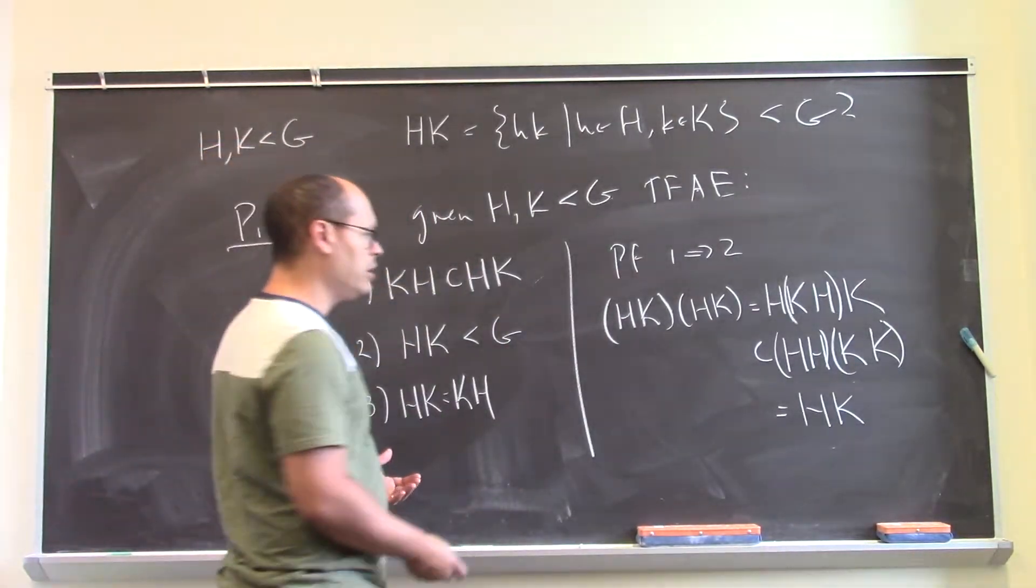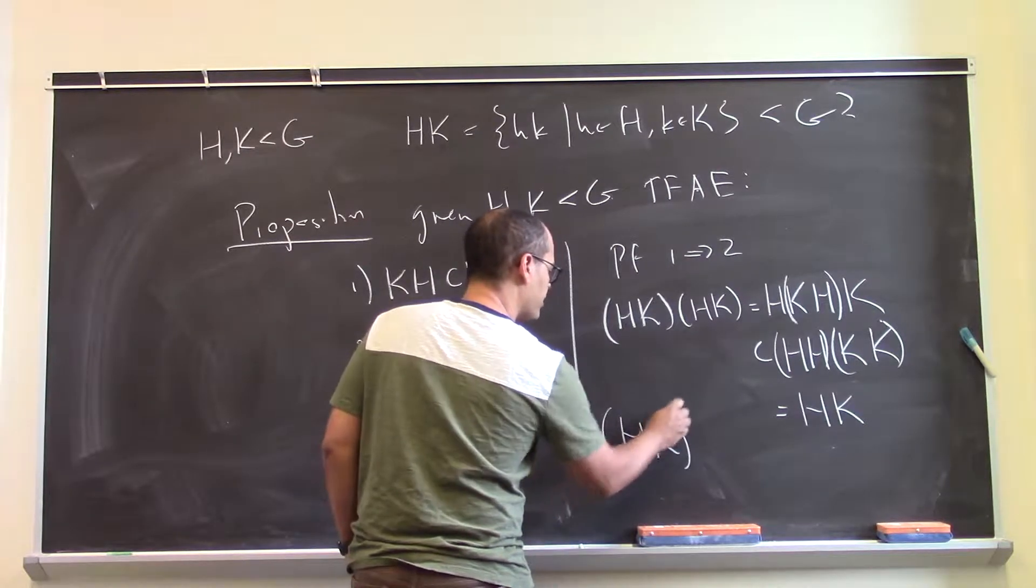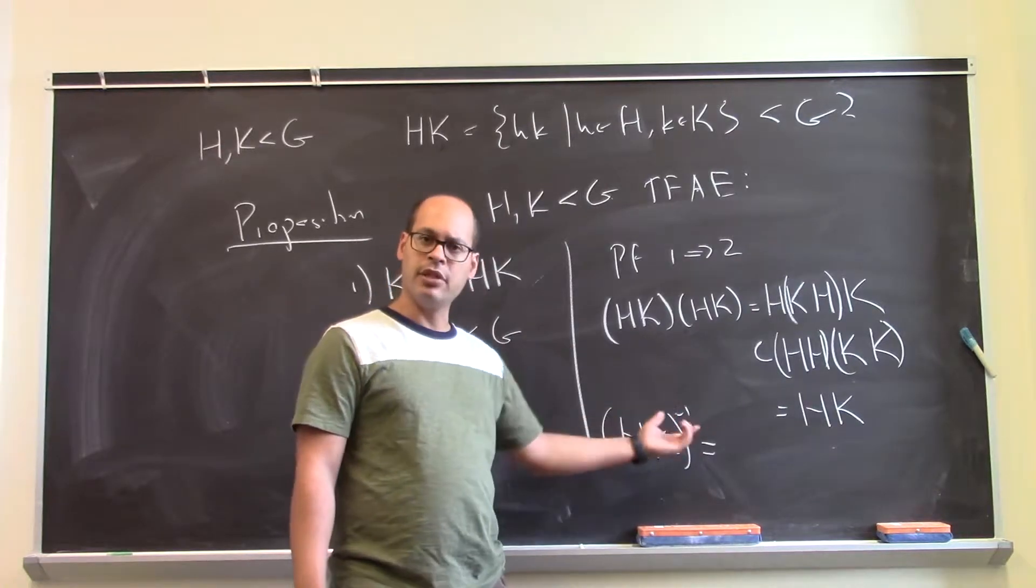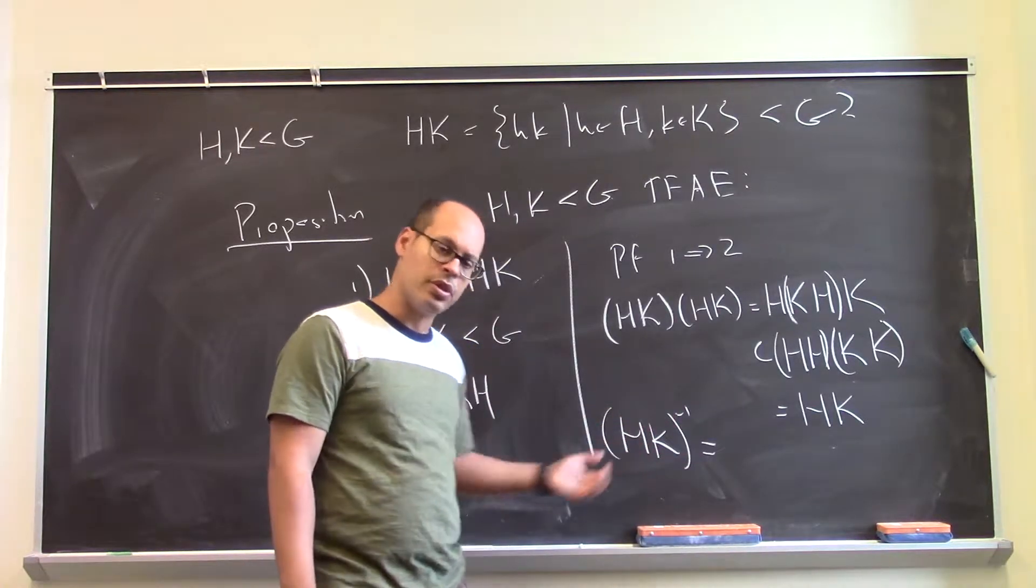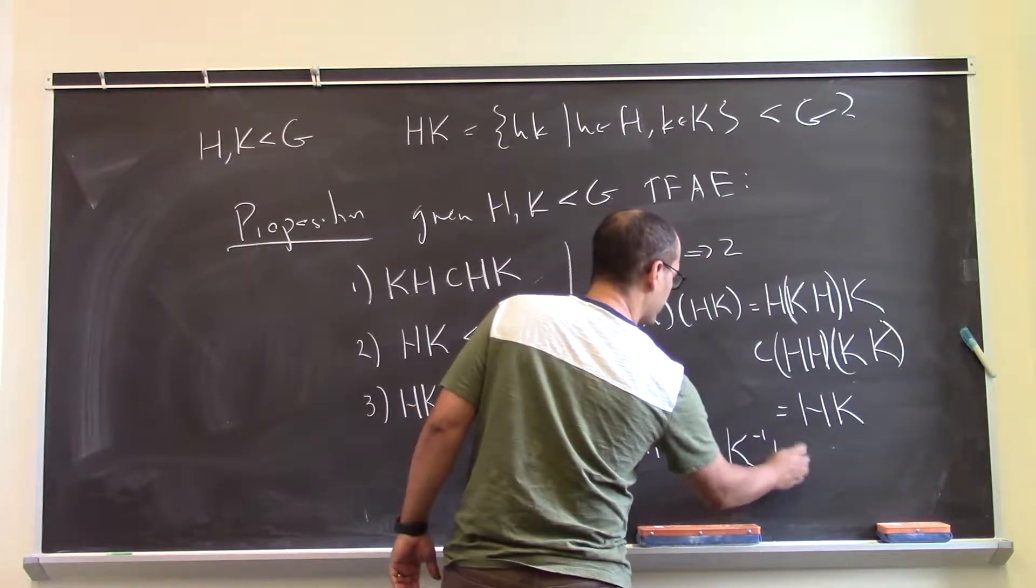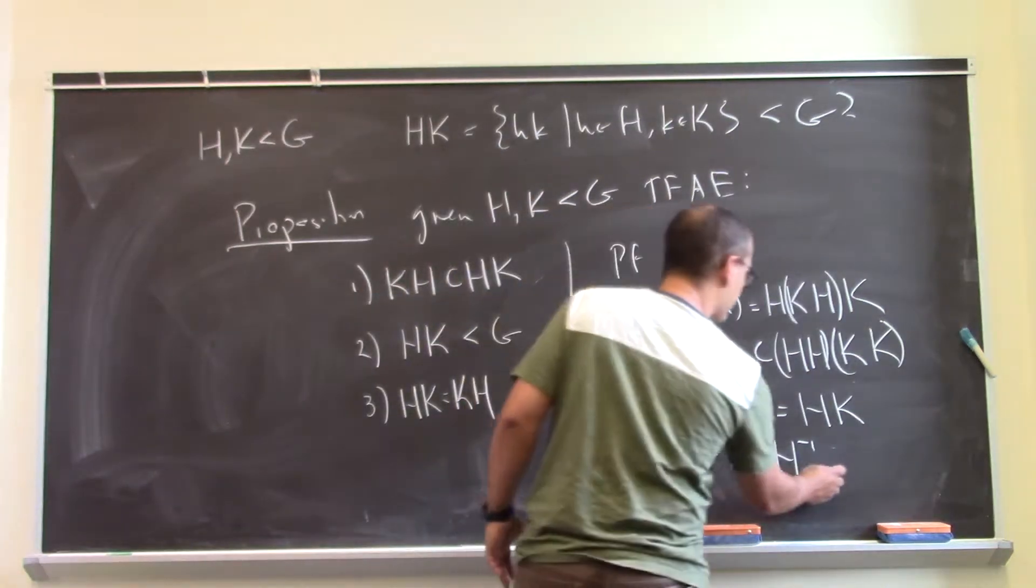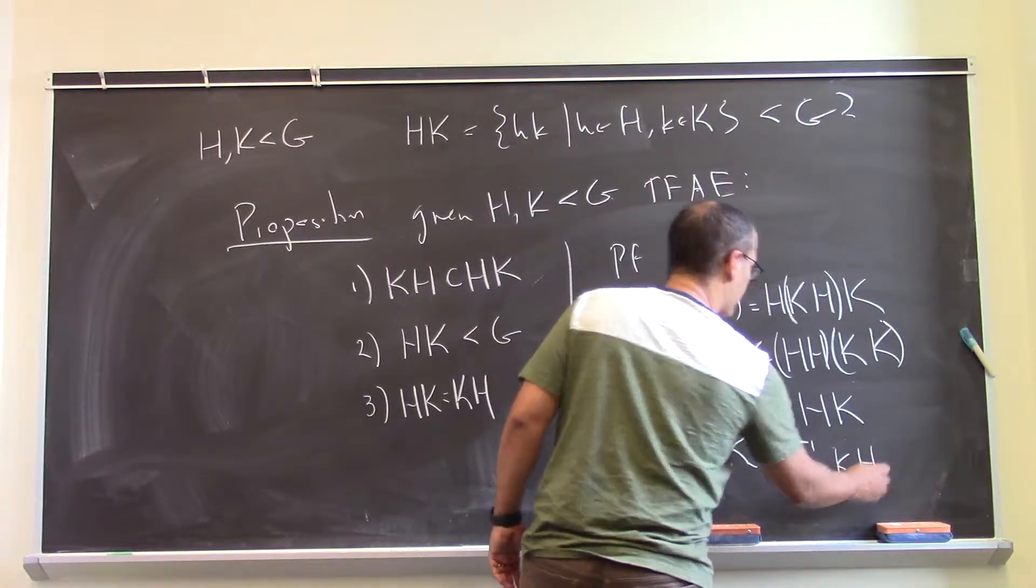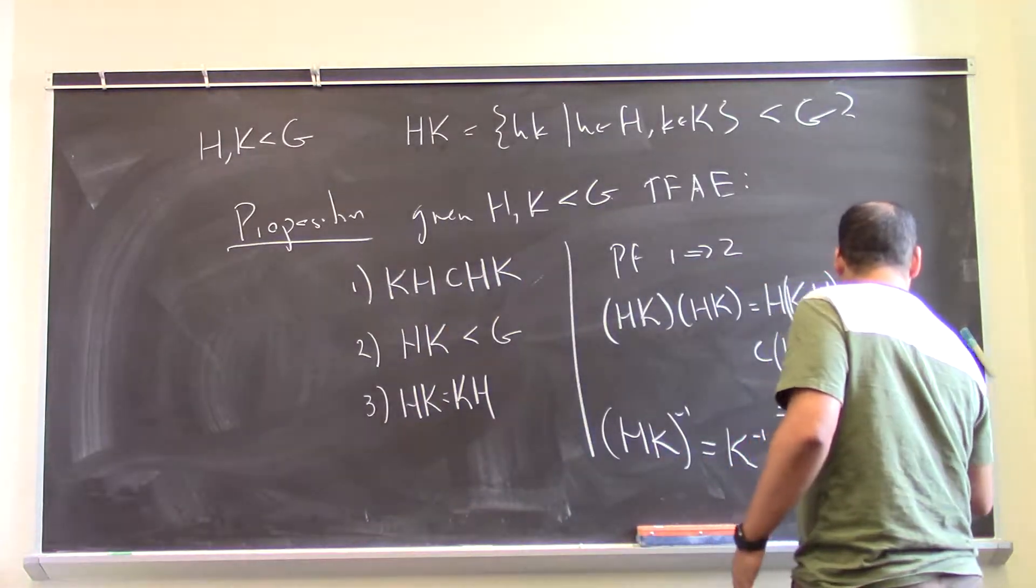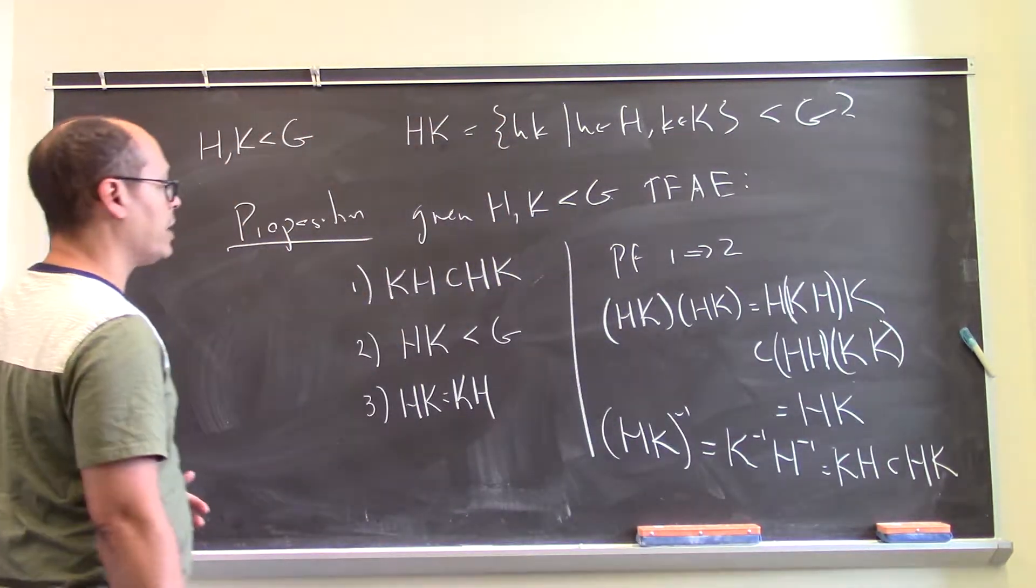How about closed under inverses? Well, if I look at HK inverse, looking at products of things in here and here and taking inverses. Inverses reverse the order of the multiplication and I get things of the form K inverse H inverse. But then again, K and H are subgroups. So that's KH. And by hypothesis, this is contained inside HK. And so I'm closed under inversion. So therefore, 1 implies 2.